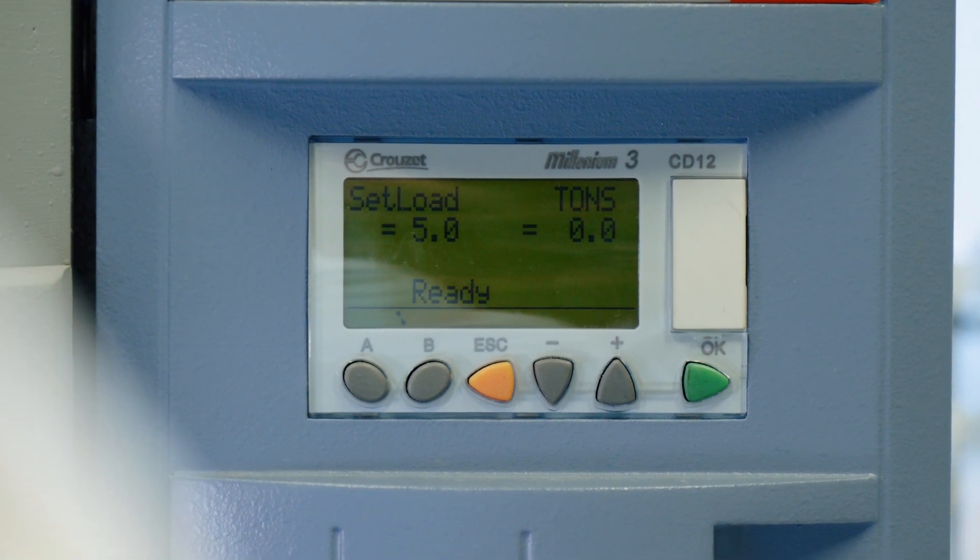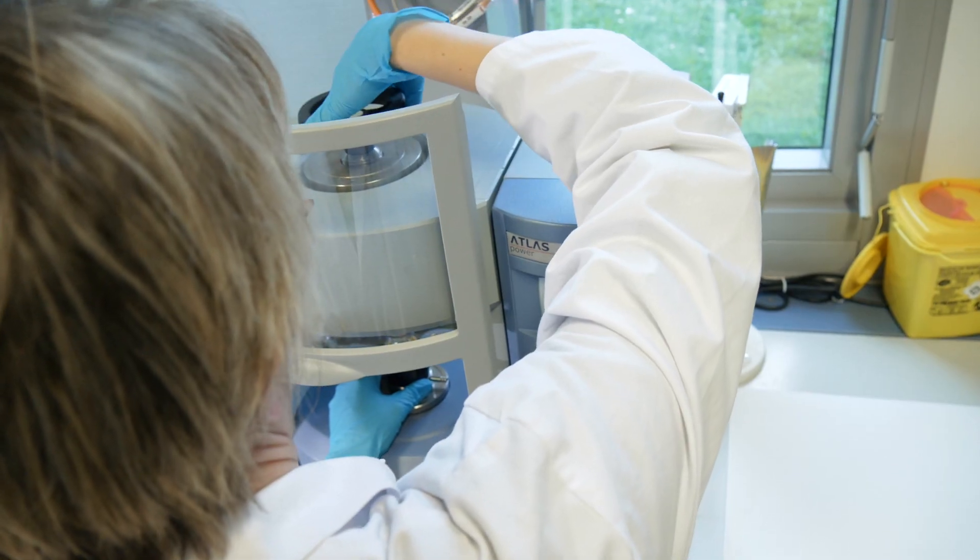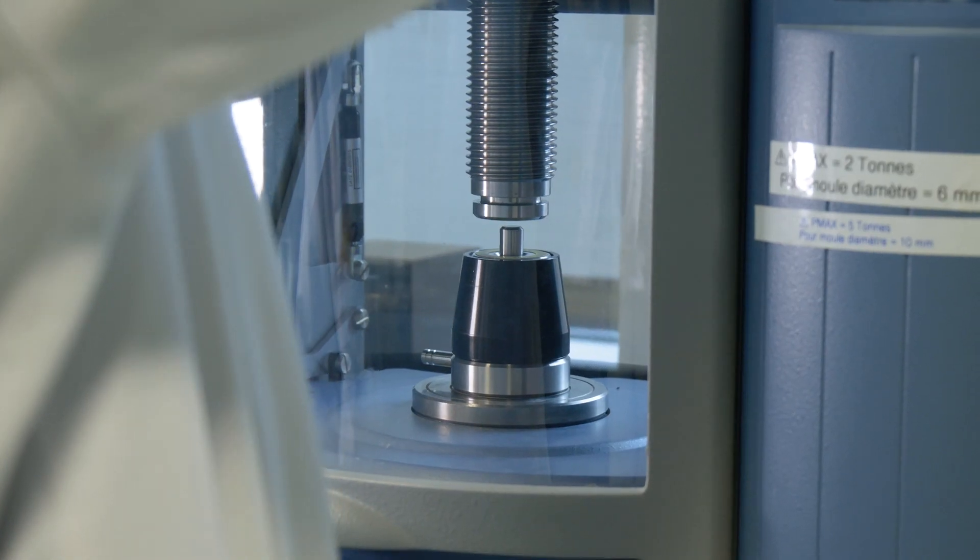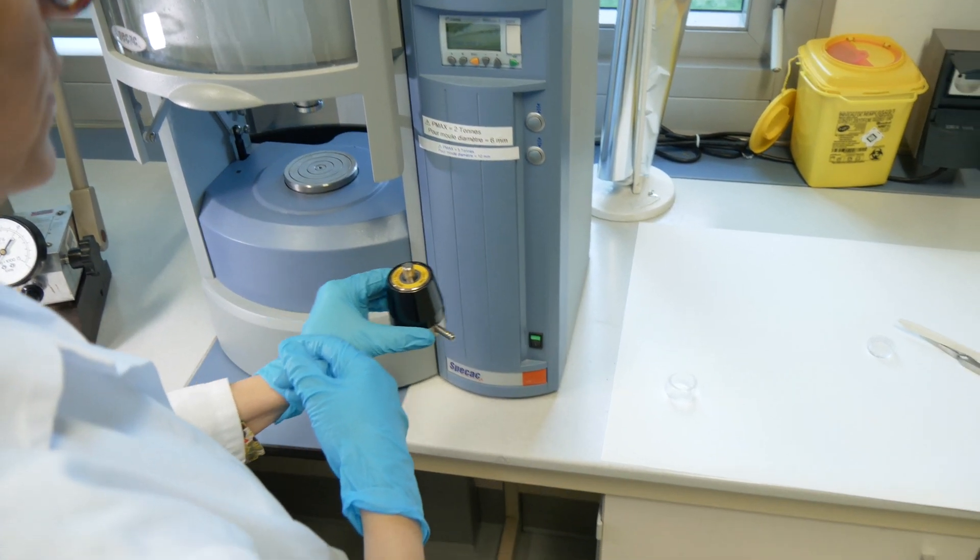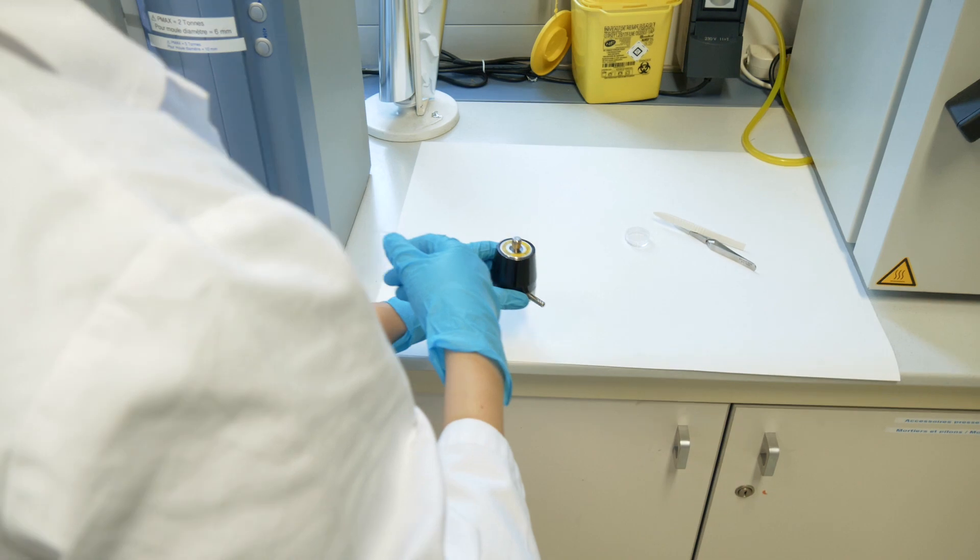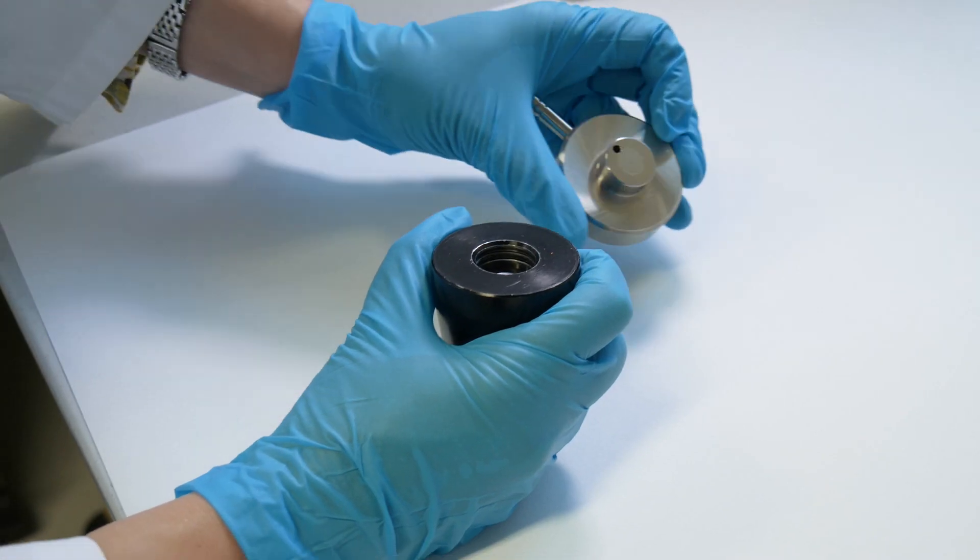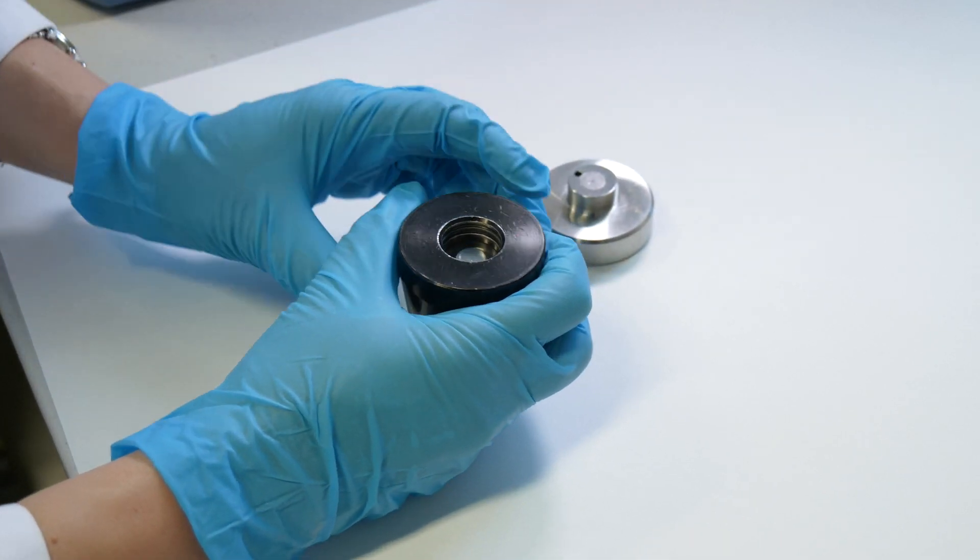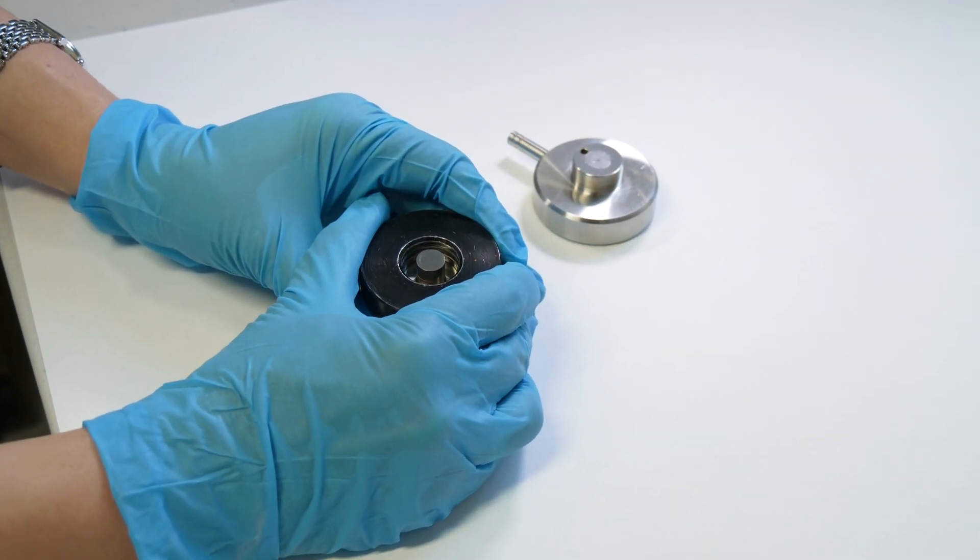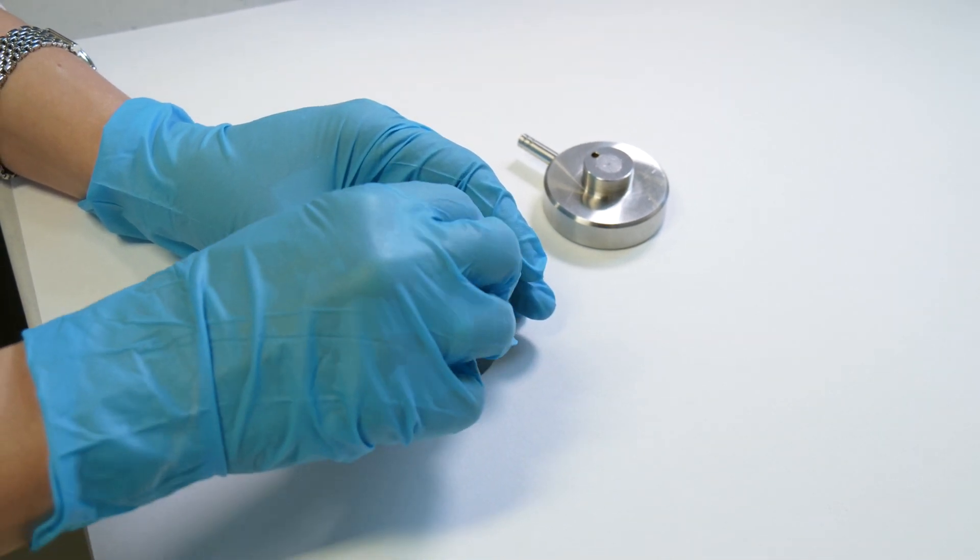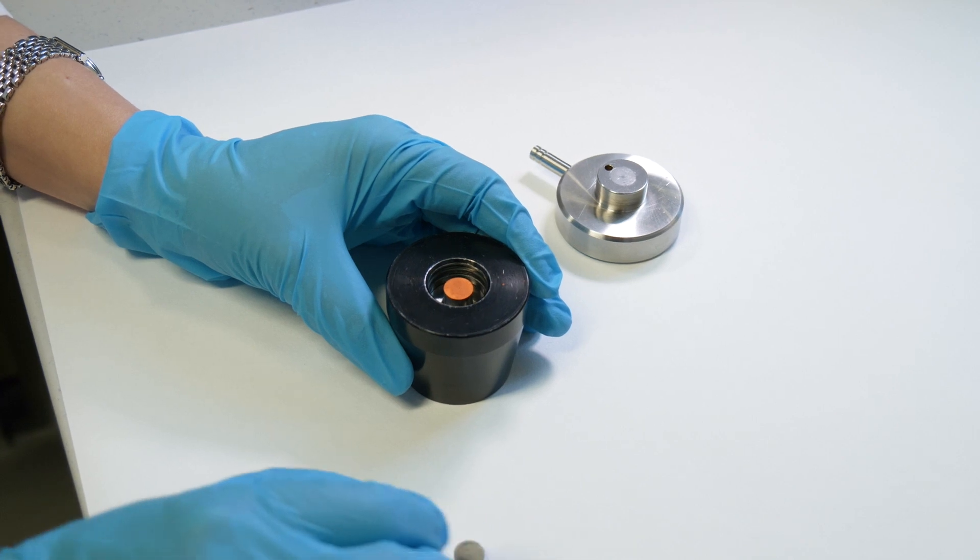When the message READY appears on the screen, you can release the mold using the screw. Transfer the pellet die to a safe place. Now you can take out the pellet. Remove the base from the mold. Invert the upper body. Remove the first die. Retrieve the pellet.